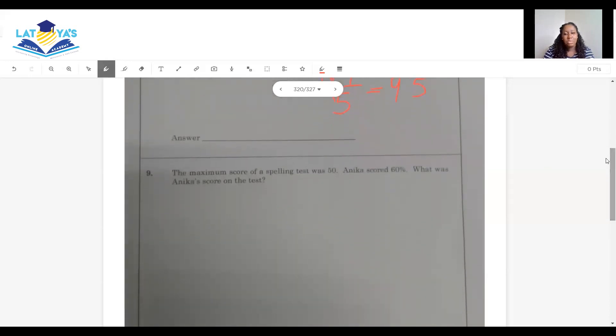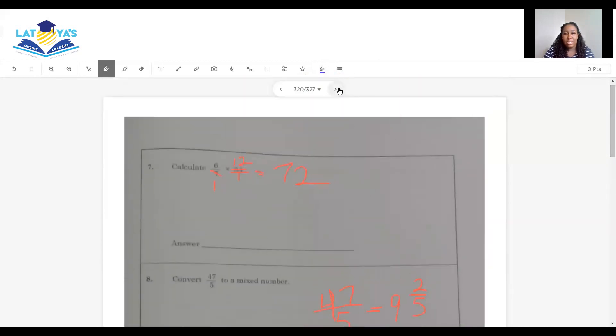Question 9. The maximum score of a spelling test was 50. Anika scored 60%. What was Anika's score on the test? All we need to do is find 60% of 50. And we will know what Anika's score was. There are different ways we can reduce this fraction. 15 to 50 is 1. 15 to 100 is 2. 2 into 2, 1. And 2 into 60 is 30. 30 by 1 is 30 over 1, which is 30. So Anika's score was 30.